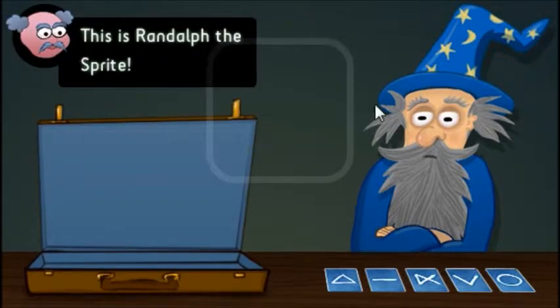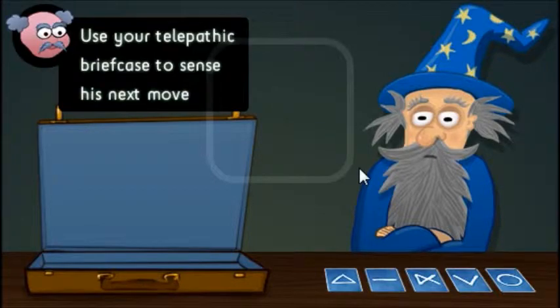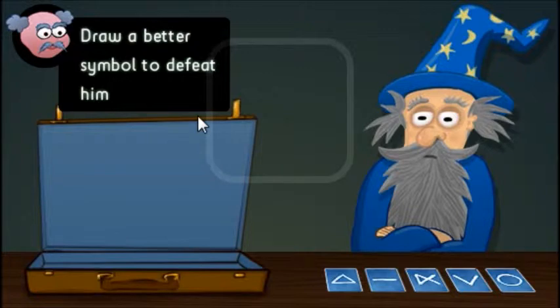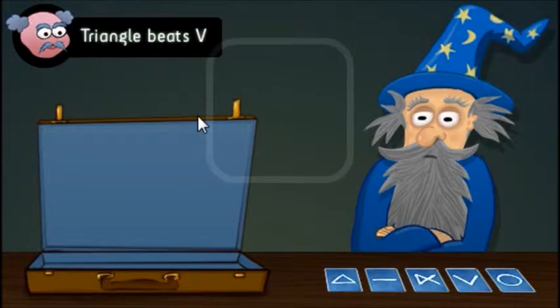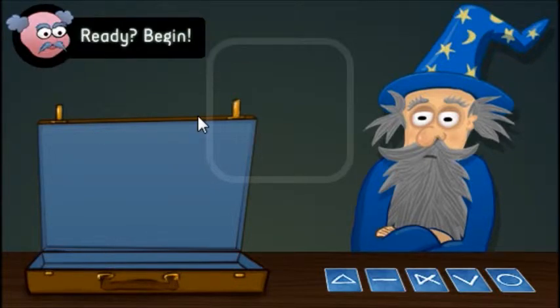This is Randolph the Sprite. I know it's Randolph. Defeat him in a psychic skirmish. Okay. Use your telepathic briefcase to sense his next move. Draw a better symbol to defeat him. It's simple. Triangle beats V, V beats line, line beats circle, circle beats X, X beats triangle, triangle beats circle, circle beats V, V beats X, X beats line, and line beats triangle. Ready? Begin.